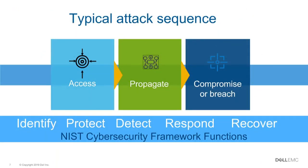I'm going to switch gears and talk about how security might unfold in a typical attack sequence and how we build different levels of security and protection into the offering. A typical attack sequence has some type of agent trying to gain access into an environment, testing any boundaries. There are things like phishing tests that companies put employees through to make sure people aren't one of the ways folks are getting access into environments.